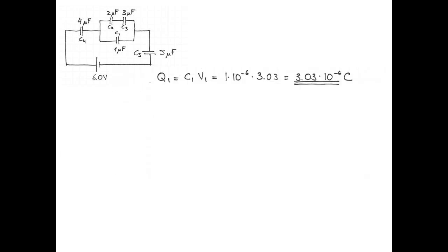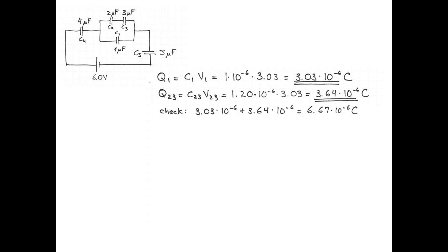With the voltage across the parallel arrangement known, we can find the charge on capacitor 1: 1 microfarad times 3.03 volts equals 3.03 microcoulombs. The charge on the series combination of capacitors 2 and 3 is 1.2 microfarads times 3.03 volts, which is 3.64 microcoulombs. Adding those two charges gives 6.67 microcoulombs, which matches the charge on capacitors C4 and C5. Awesome!